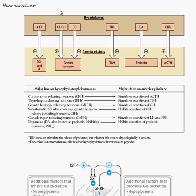For the hypothalamus, as you can see, these are all the releasing factors. These releasing factors go into that portal vessel system and thereby go into the anterior pituitary, which causes the anterior pituitary cells to secrete specific hormones. The one we're focusing on is the growth hormone system.